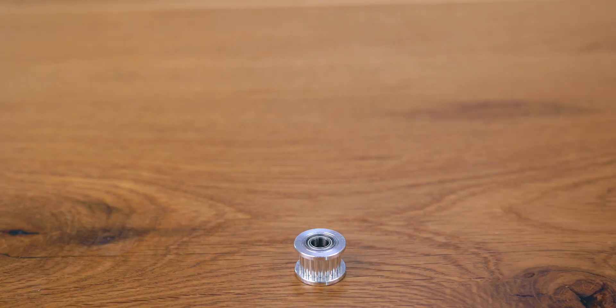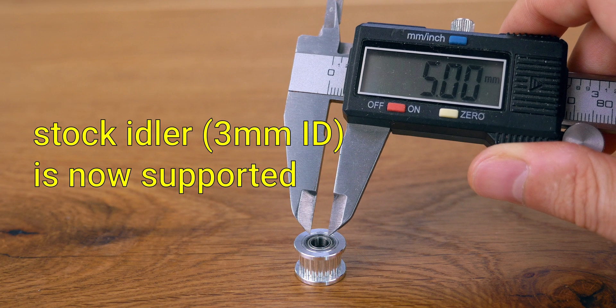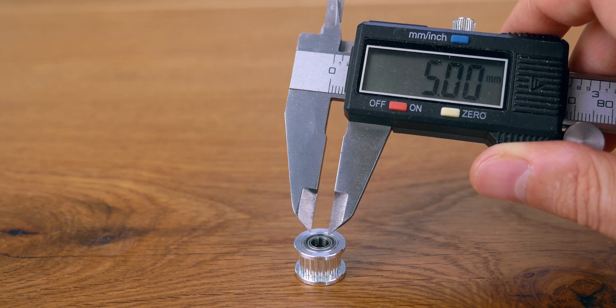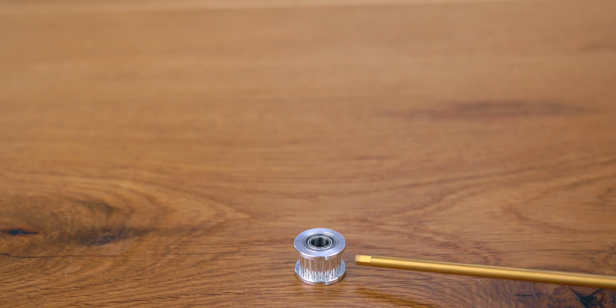A 20 teeth idler with a wider 5 mm internal diameter, with or without teeth. This is a gates idler. It hasn't lost its teeth yet.